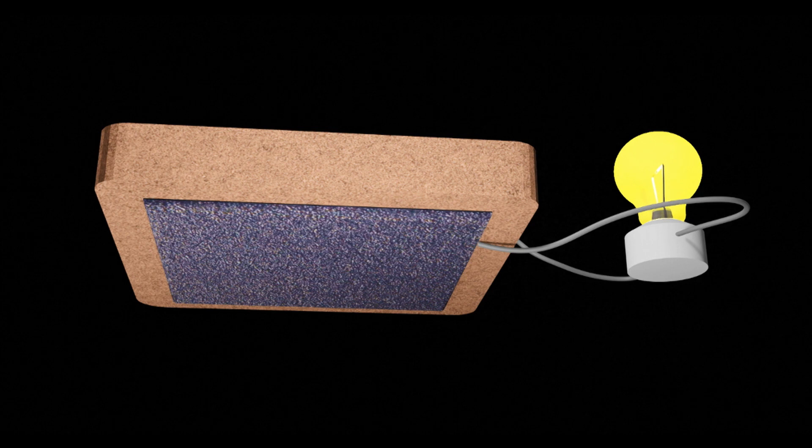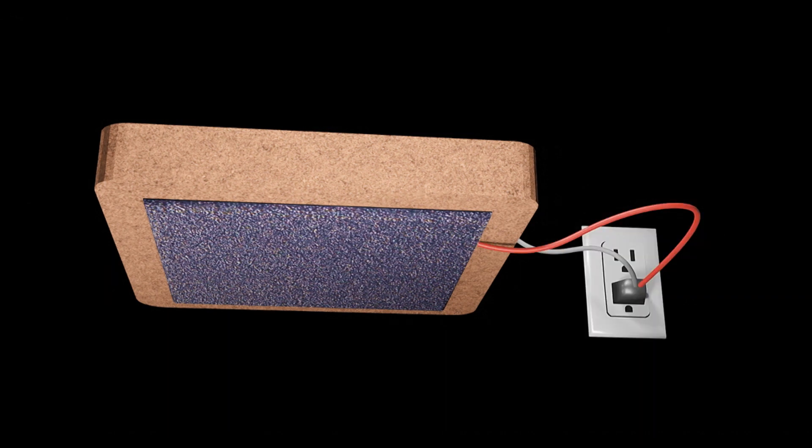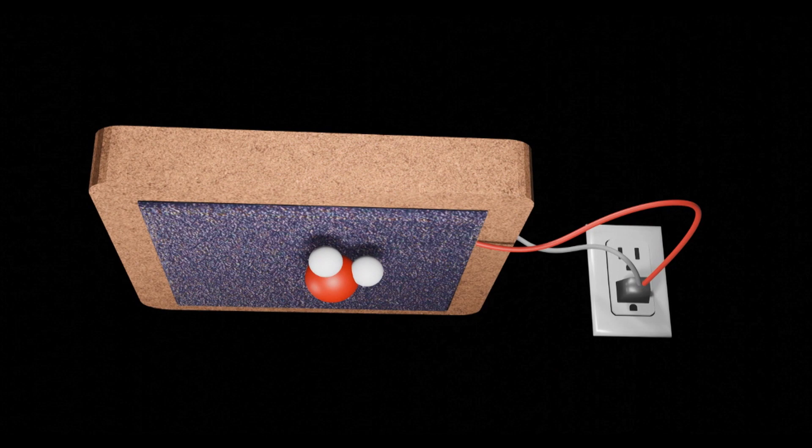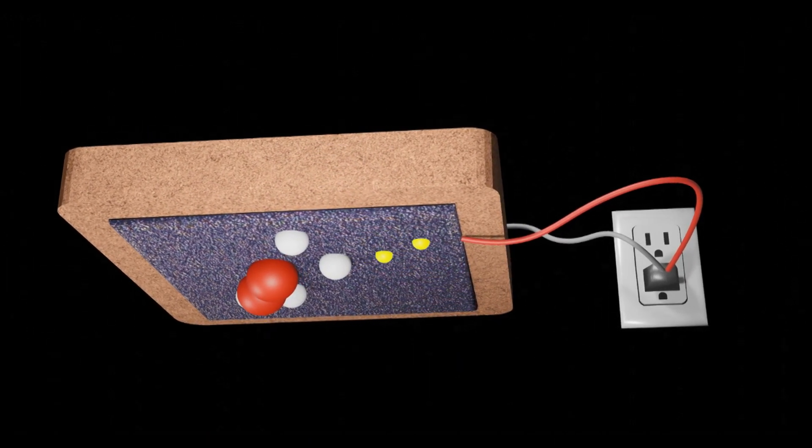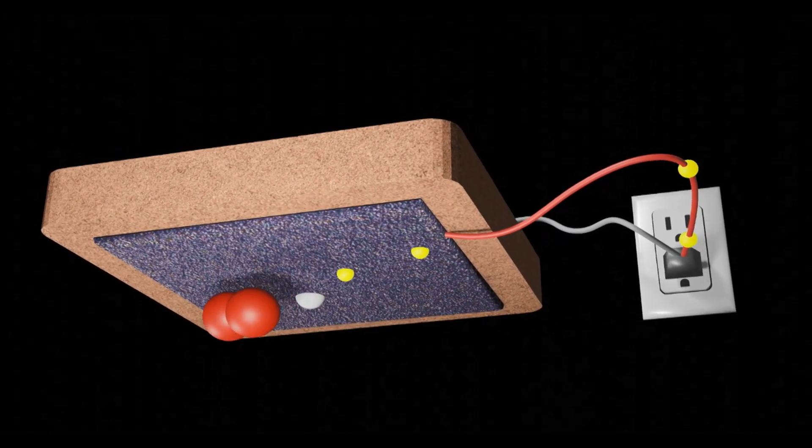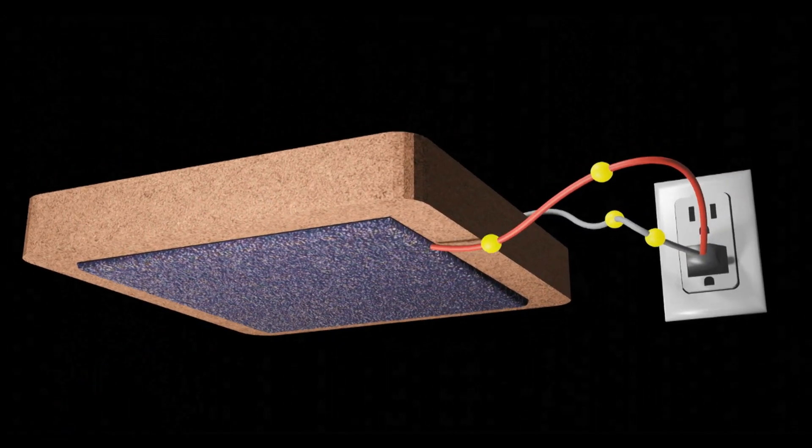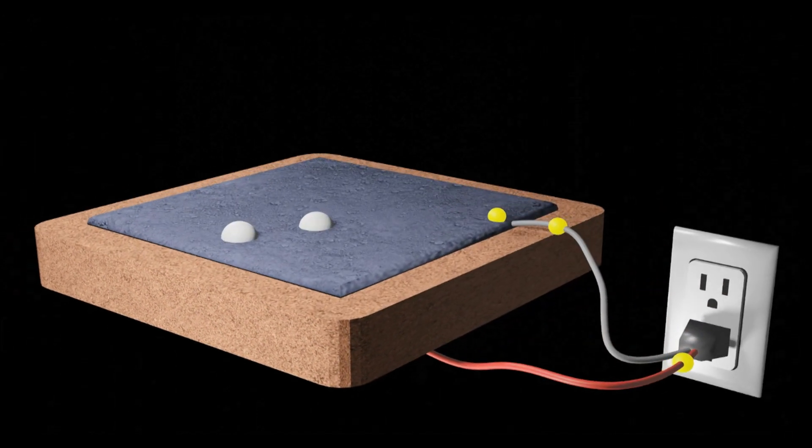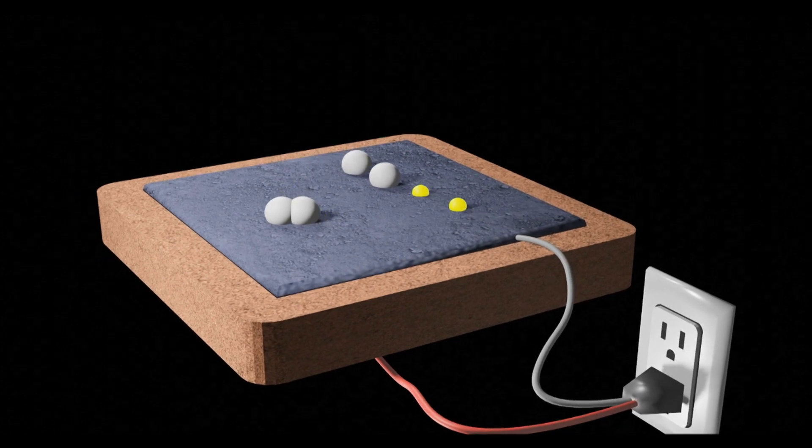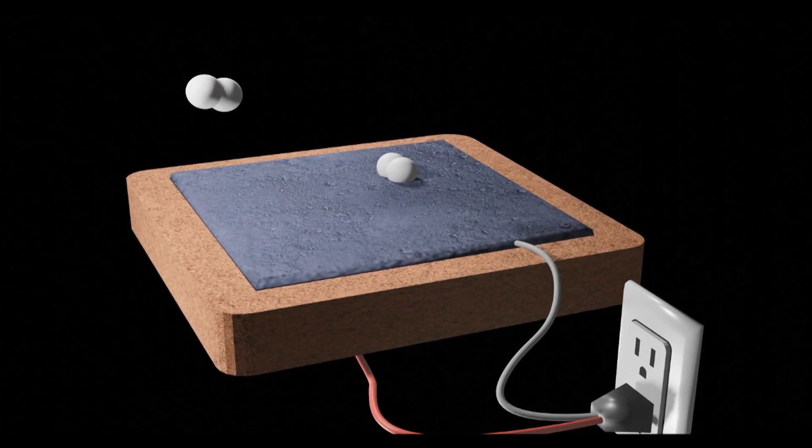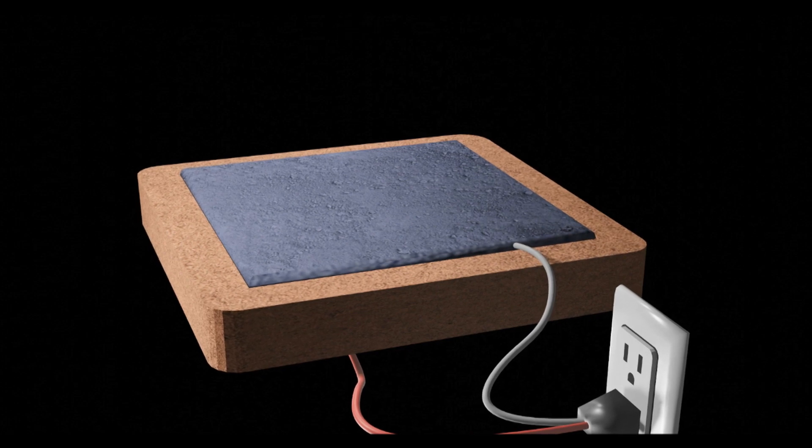Actually, we can reverse this process. Rather than making electricity, by providing electricity, we can split water into oxygen and hydrogen. In this case, a water molecule comes and attaches itself on the electrode, gets separated to protons and oxygen. And protons get transferred to the other electrode through the electrolyte. And they combine to give us a pure hydrogen stream. So we get a pure hydrogen stream and a pure oxygen stream on the two sides of the electrolytic cell, in this case.